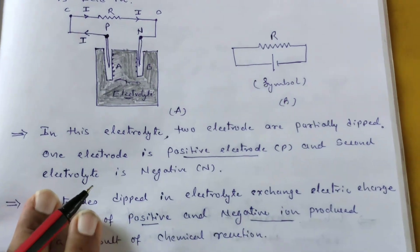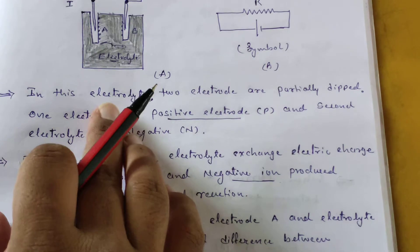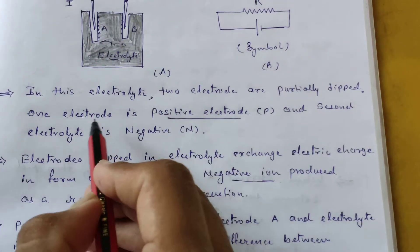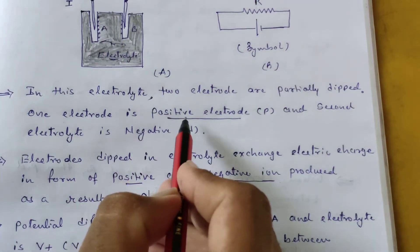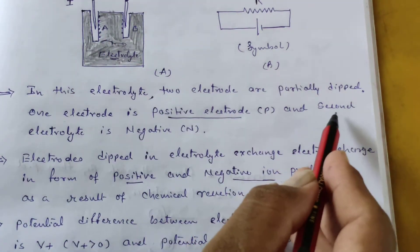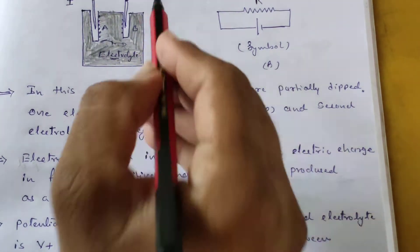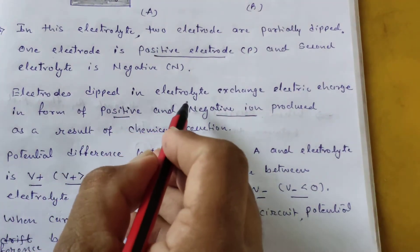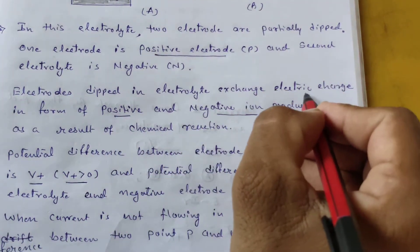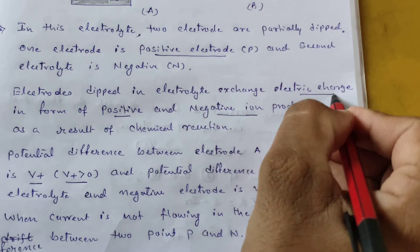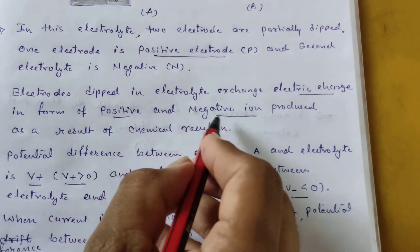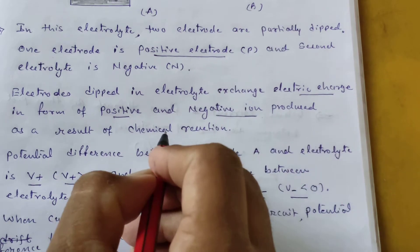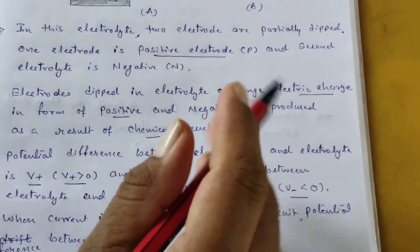Now let's understand the theory. In this electrolyte, two electrodes are partially dipped — one electrode is positive, indicated by P, and the second electrode is indicated as N, the negative electrode. The electrodes dipped in the electrolyte exchange electric charges in the form of positive and negative ions, whatever is produced as a result of chemical reaction.